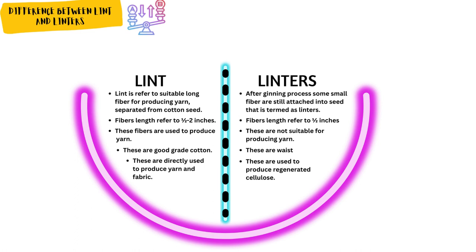Fiber length for lints refers to 1.5 to 2 inches. For linters, fiber length refers to half an inch. Lints are used to produce yarn, whereas linters are not suitable for producing yarn.